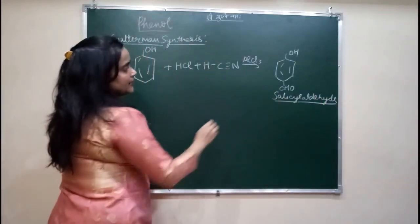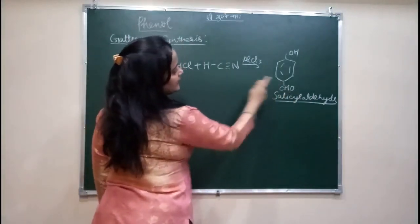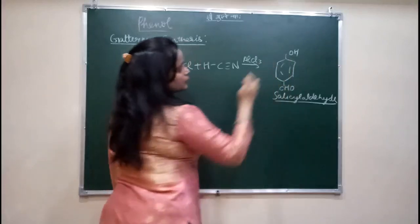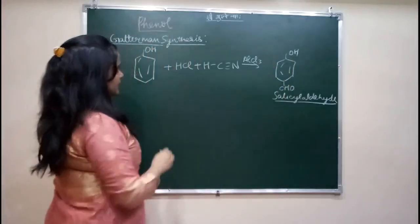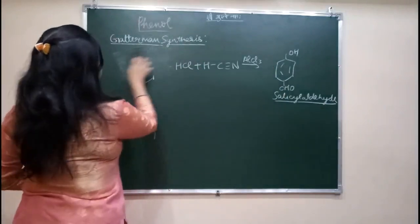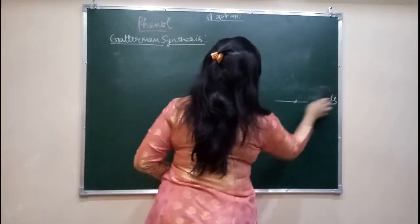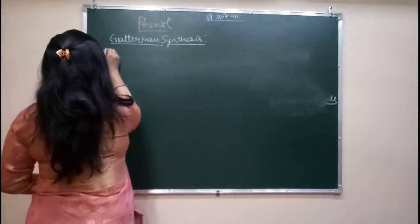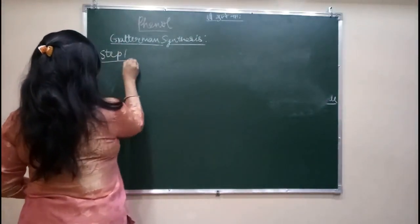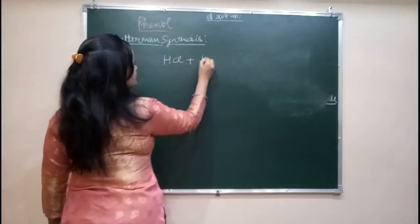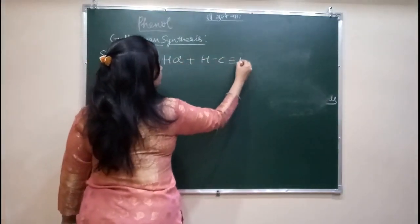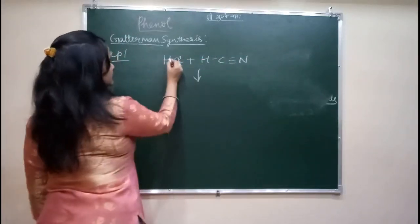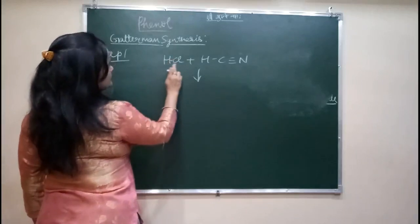The aldehyde group attacks at the para position, and if the para position is occupied, then it will attack at the ortho position. Now we will do its mechanism. First of all, the reagents used in the reaction — in step one, HCl and HCN are participating in the reaction.